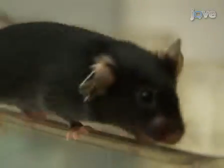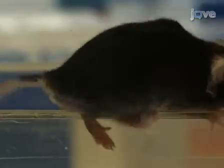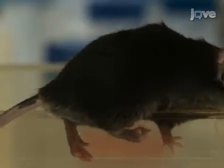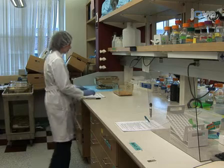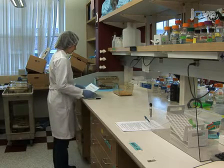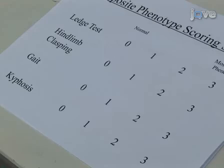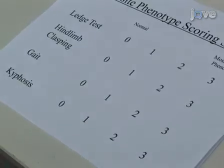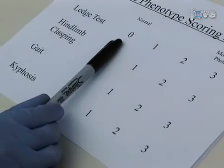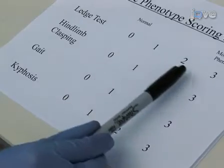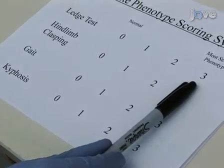The ledge test is a direct measure of coordination, which is impaired in cerebellar ataxias and many other neurodegenerative disorders. This measure is the most directly comparable to human signs of cerebellar ataxia. To prevent bias, the experimenter performing the assessments should not have knowledge of the animal's genotype. During assessments, individual measures are scored on a scale of 0 to 3, where 0 represents the absence of the phenotype, and 3 represents its most severe manifestation.